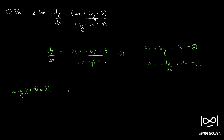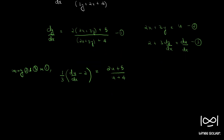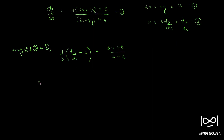We get (1/3)(du/dx − 2) = (2u + 5) / (u + 4). Rearranging, du/dx = 3·(2u + 5)/(u + 4) + 2, which gives du/dx = (6u + 15)/(u + 4) + 2. Bringing the 2 into the fraction: (6u + 15 + 2(u + 4)) / (u + 4).